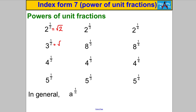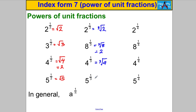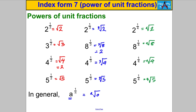Two to the half means the square root of two; three to the half means the square root of three; four to the half is the square root of four, which is two; five to the half is the square root of five. Two to the third means the cube root of two; eight to the third means the cube root of eight, which is two; four to the third means the cube root of four; five to the third means the cube root of five. Moving to quarters: two to the quarter is the fourth root of two; eight to the quarter is the fourth root of eight; four to the quarter is the fourth root of four; five to the quarter is the fourth root of five.